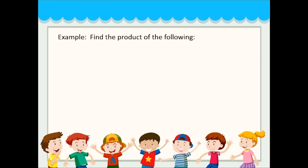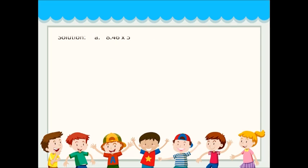Find the product of the following: A) 8.46 times 5, B) 23.85 times 3.5, and C) 2.3 times 6.5 times 8.2.